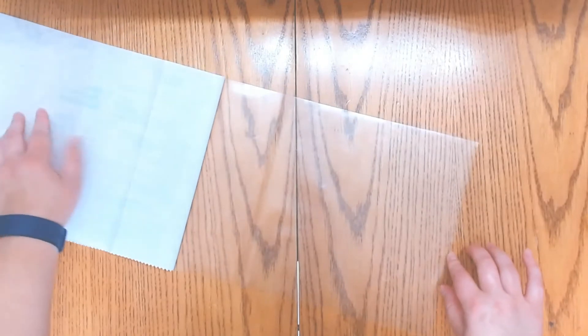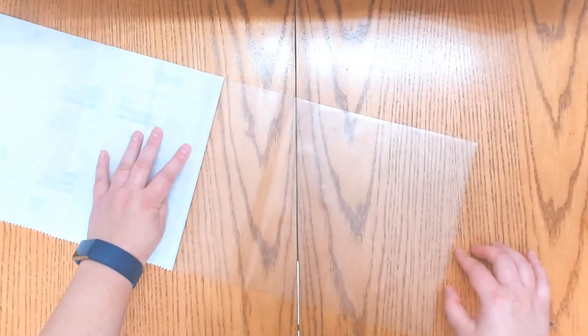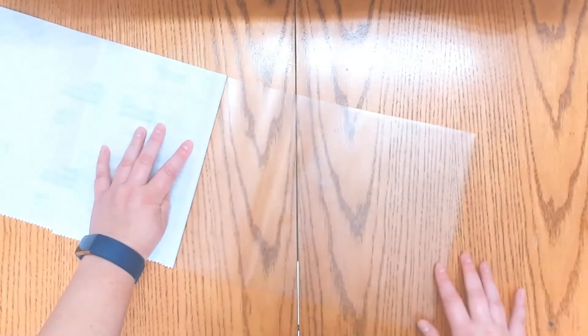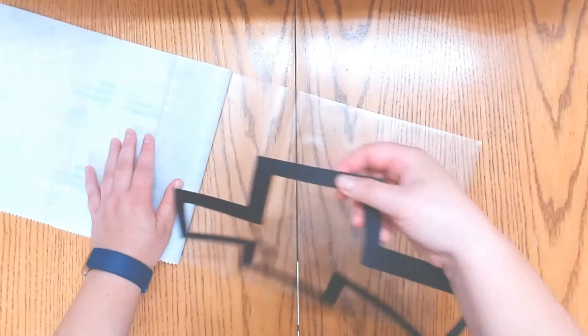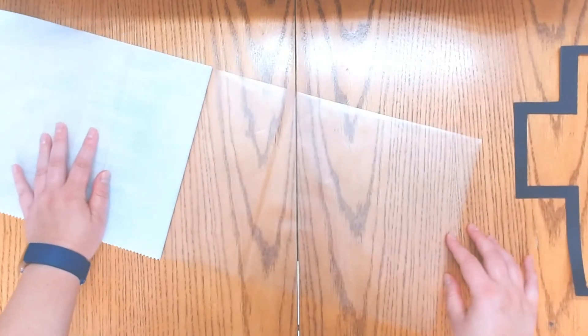I wouldn't recommend taking the whole paper off yet just so that you have something to kind of hold it in place without your hands getting all sticky. You're going to take your cross and you're going to line it up so that it sticks onto the adhesive.